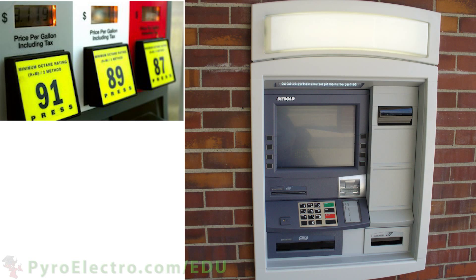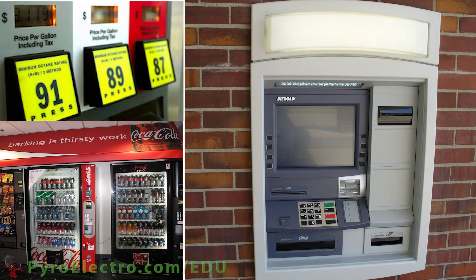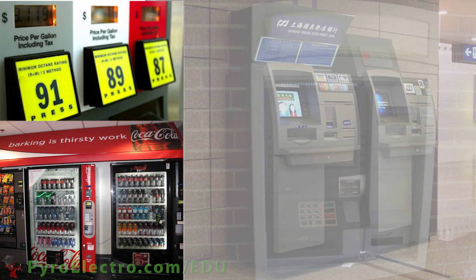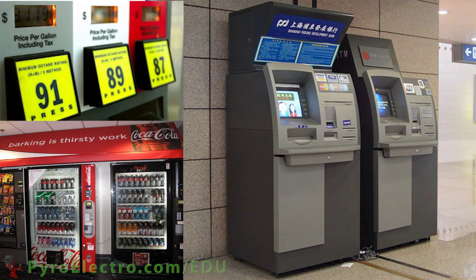In the real world, we see and use single and multi input and output systems every day. ATM machine buttons, gas station buttons, soda machines, and calculators are all systems with both single and multiple inputs that influence some type of output, whether it is giving you money or a soda.